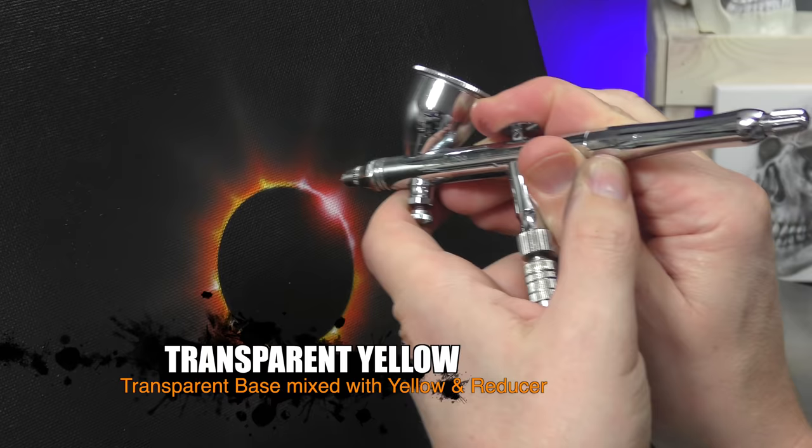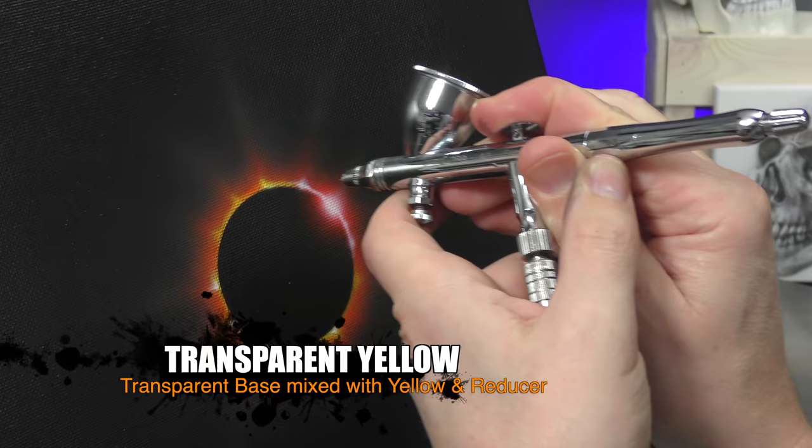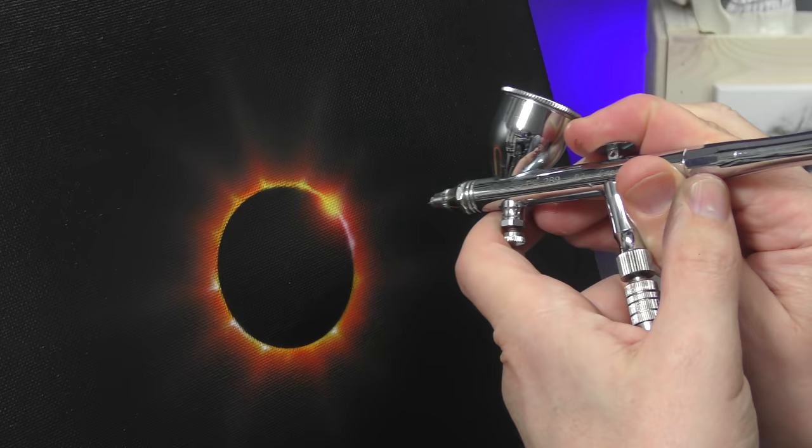Now working back over the top of those highlighted sections with the transparent yellow again. Just to blend the design nicely. I'm letting some of my overspray hit that orange.